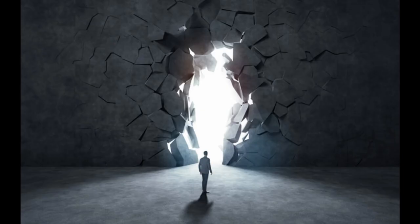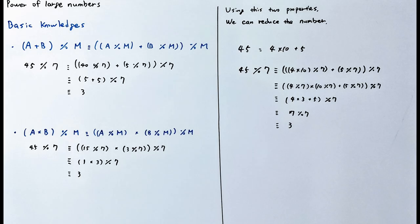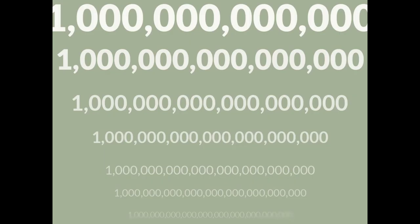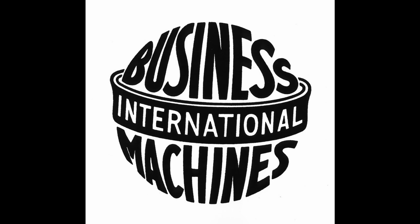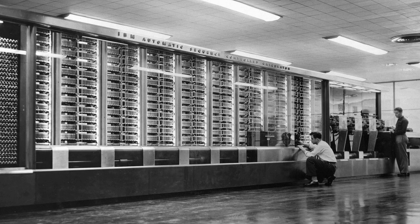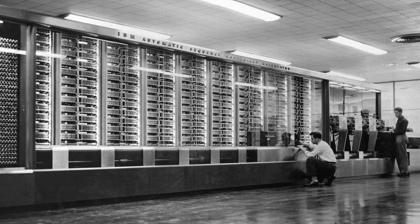Moving into 1937, Howard Aiken wanted to make a computer that could perform calculations using large numbers, and by 1944 he succeeded in creating the Mark One with the help of computer giant IBM. The Mark One was the first programmable digital computer — and since we live in a digital age now, we have the Mark One to thank for that.